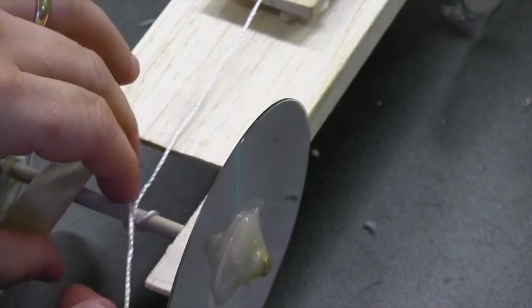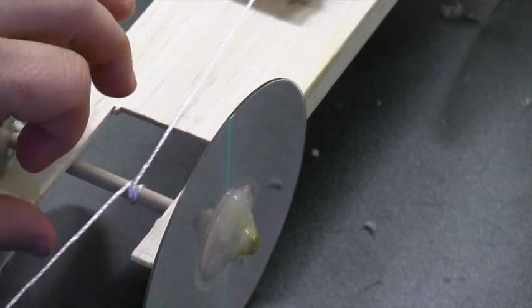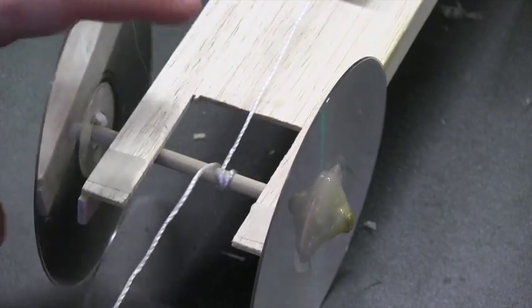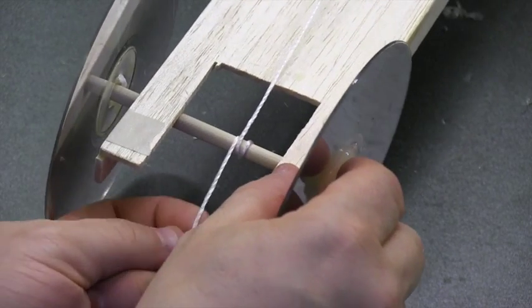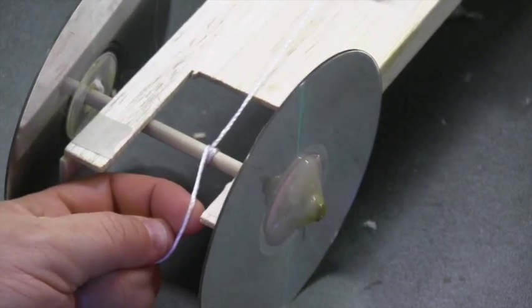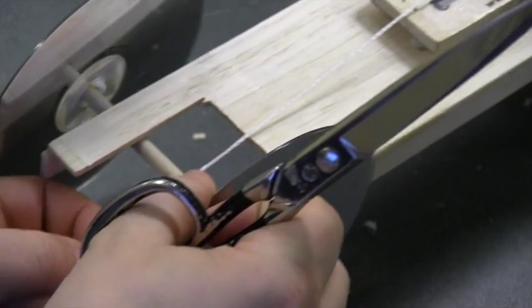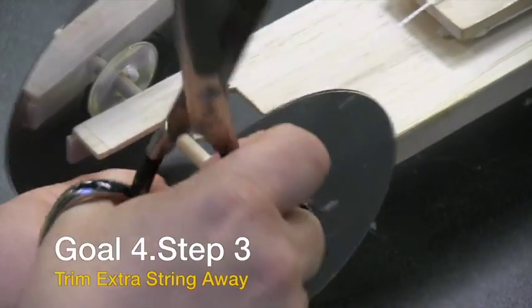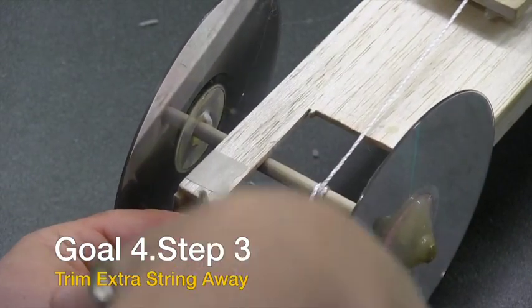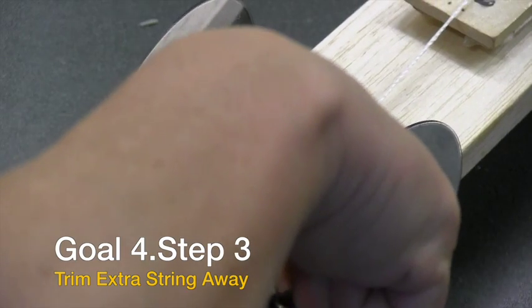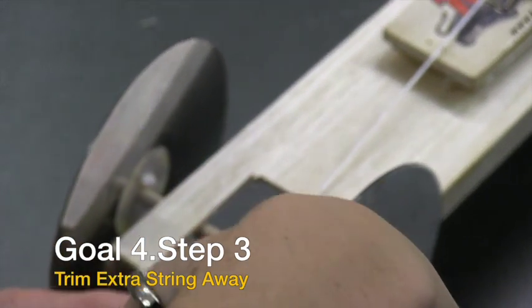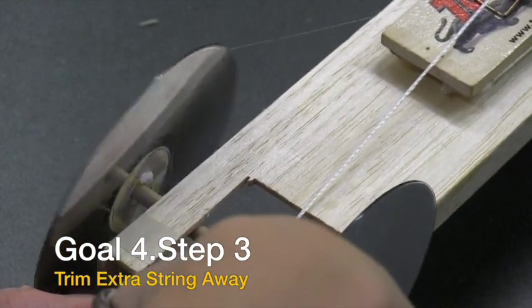We just wrap it twice around and we have the excess coming off the back end. We then take our scissors and trim the string after we've wrapped it twice around, so the string is going down from the front of the car all the way down past just to the back end of the car. We're going to take the string and cut it.